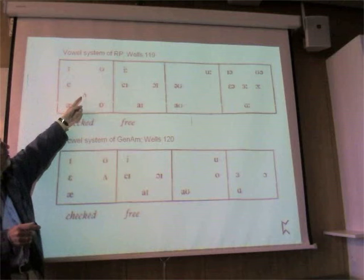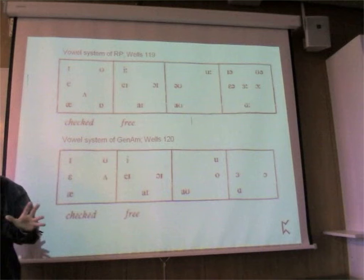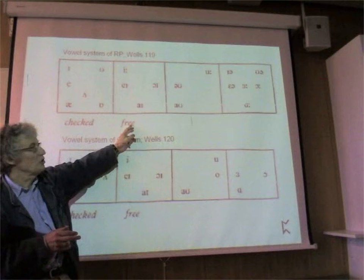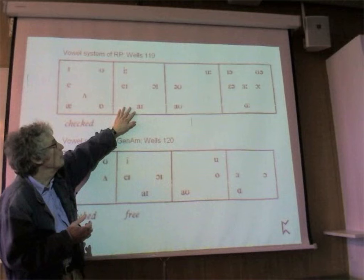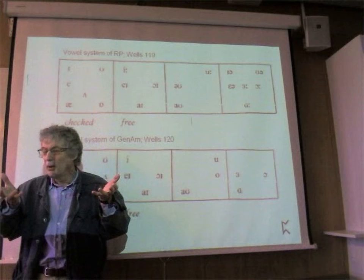So those are the lax vowels: kit, dress, trap, strut, lot, and foot - the short lax vowels. The other three are the free vowels, the vowels that can occur at the end of a word, and those are the tense vowels. He puts them into three groups always. The first group is the upper forward group.